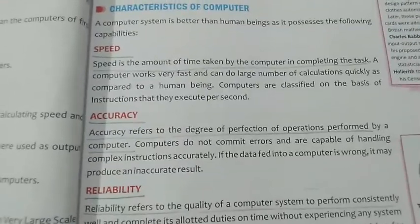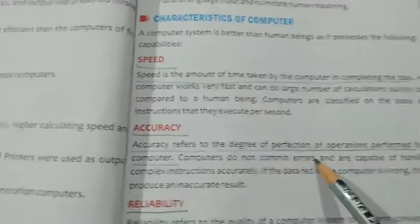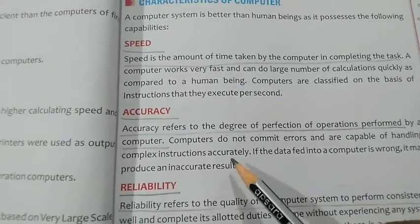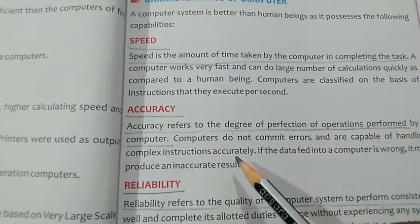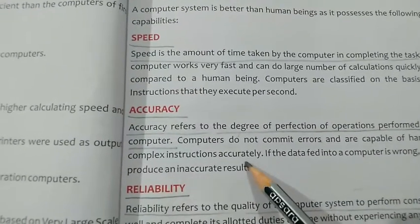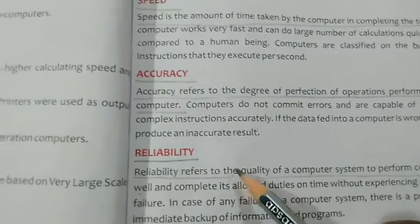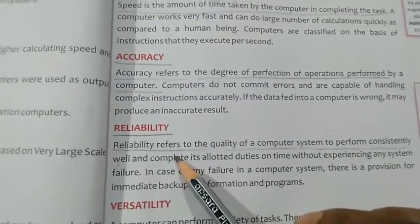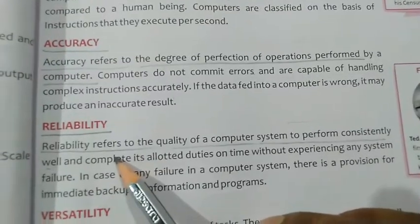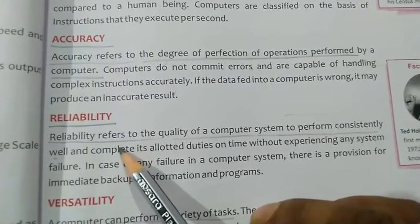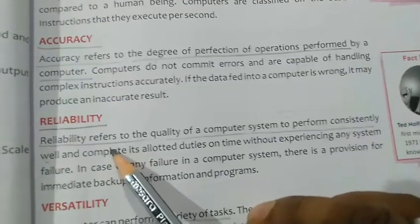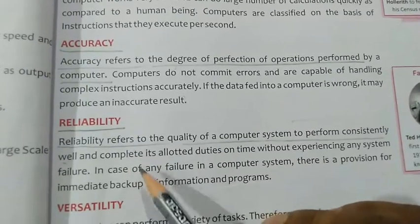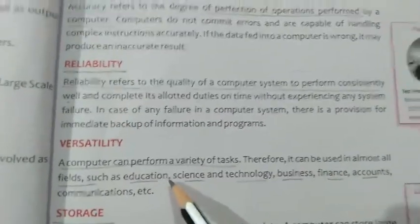A computer performs all calculations without errors and is capable of handling a large amount of data quickly and accurately. Next is reliability. Reliability means whatever answers the computer displays are always correct — we can say it is always correct without any failure.